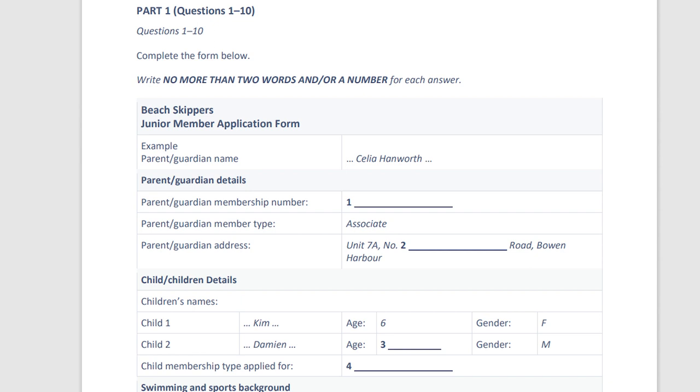Now then, how many children would you like to enrol? Two, actually. I have a girl called Kim. She's 6. And then there's my son Damien, who's 12. Okay. Now, have you thought about the kind of membership you want? Looking at your leaflet here, I can see there's the social or the competition membership. Well, I think I should put them in for the social membership. I don't think they have enough experience for the competitions yet because they didn't get to the beach much in Germany.